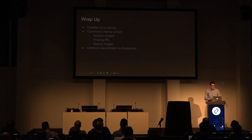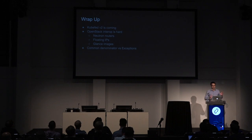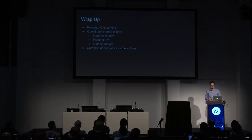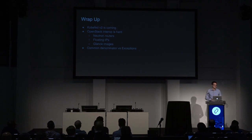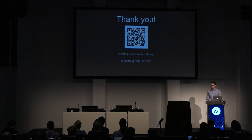To wrap up: KubeFed v2 is not there yet but it's coming, which would be much nicer than using CI workarounds for federation. Also, OpenStack interop is kind of hard. Each cloud provider has the OpenStack API, yes, but slightly different versions. Some allow Neutron routers, some don't. Some allow floating IPs, some don't. Some have custom Glance images, some change default usernames, some use raw images, VHD, or QCOW2 images. As a consumer you have to decide whether to handle all those exceptions or take a common denominator. Each organization has to make that decision. Thank you very much for your attention — we can take questions.